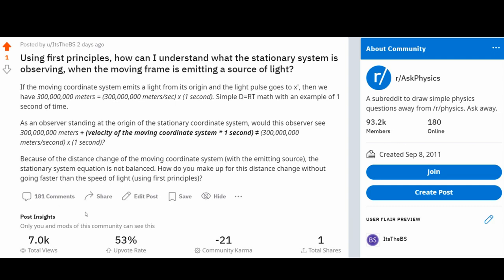So after 7,000 views and a bunch of comments, the answer was basically, you can't. The Einstein defenders said that you can't get to relativity using distance equals rate times time. Now that's crazy because I don't think they realize that they're siding with me.